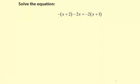Solve the equation. Here we have negative x plus 2 in parentheses, then minus 2x equals negative 2 times x plus 1 in parentheses.